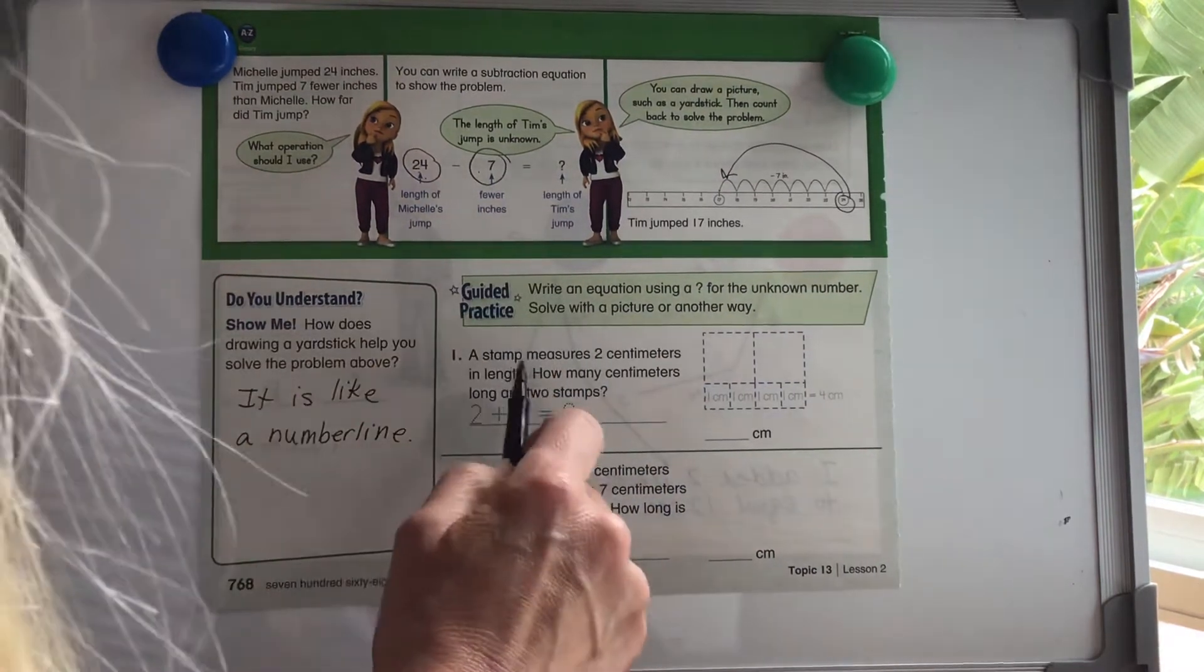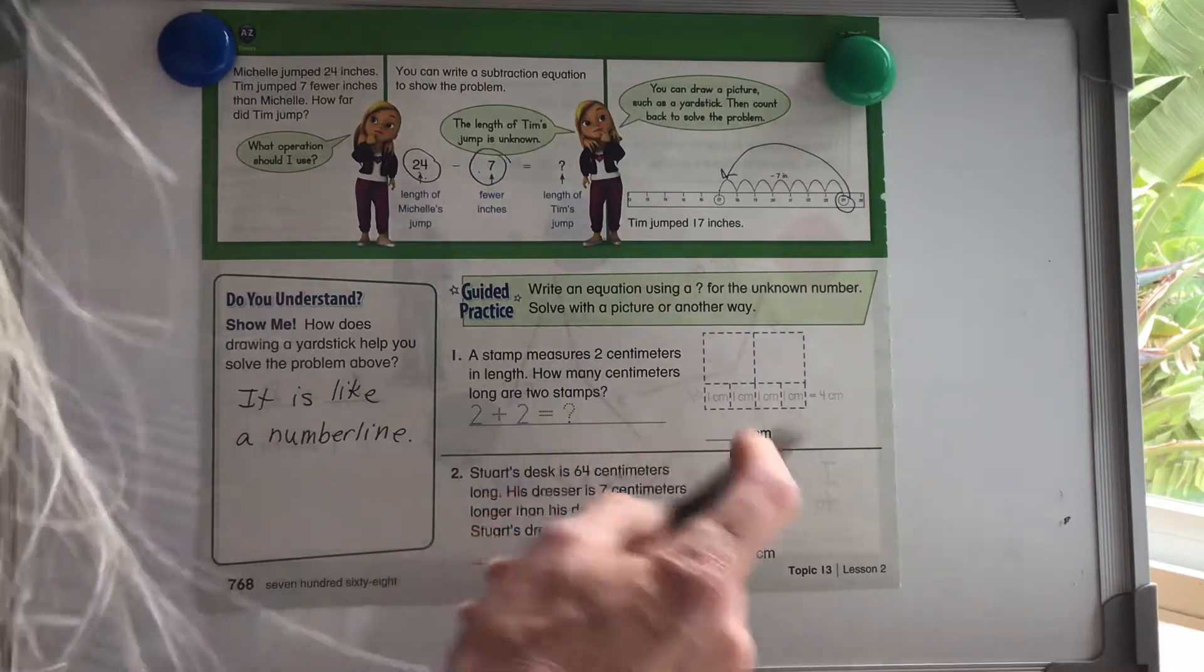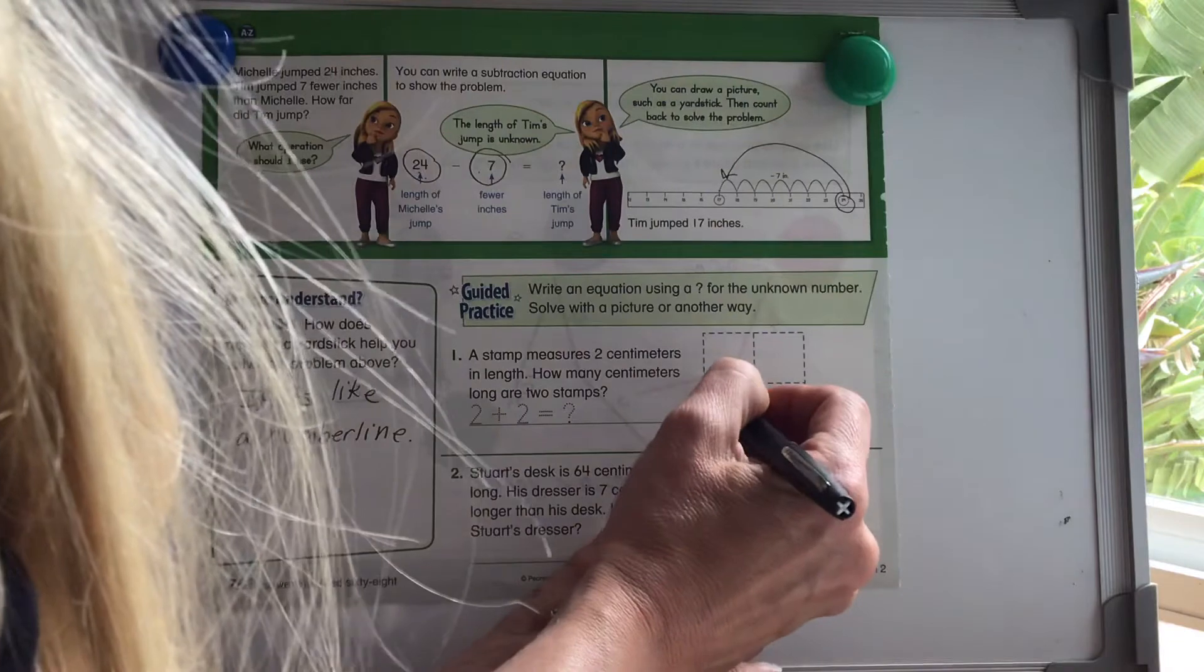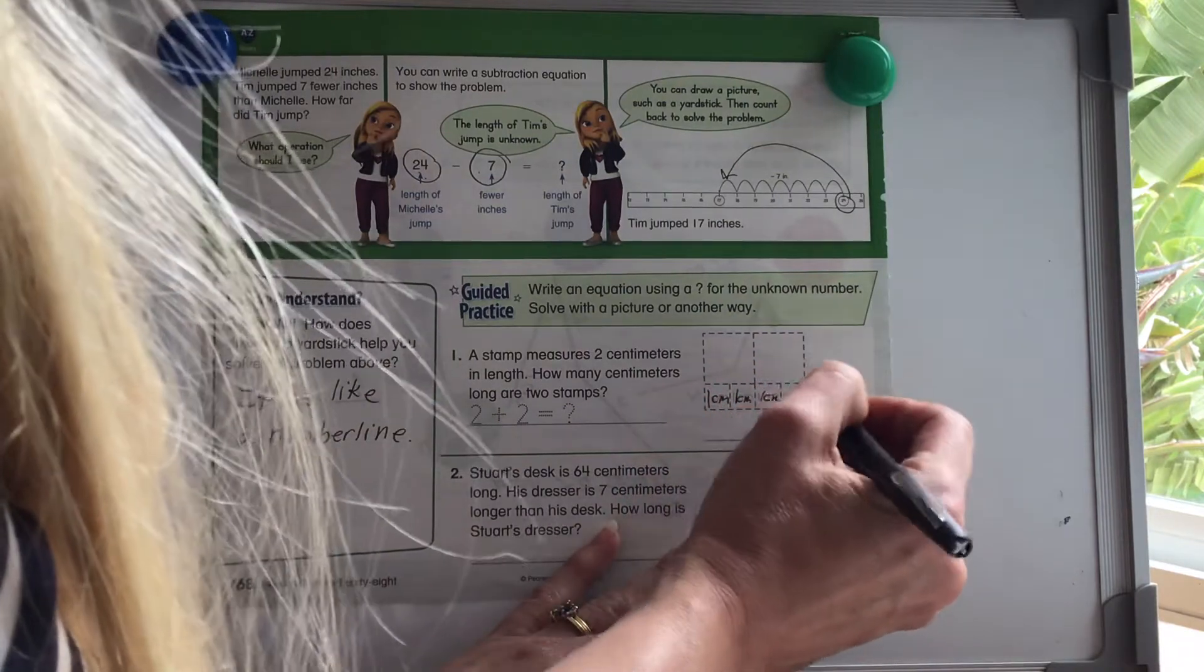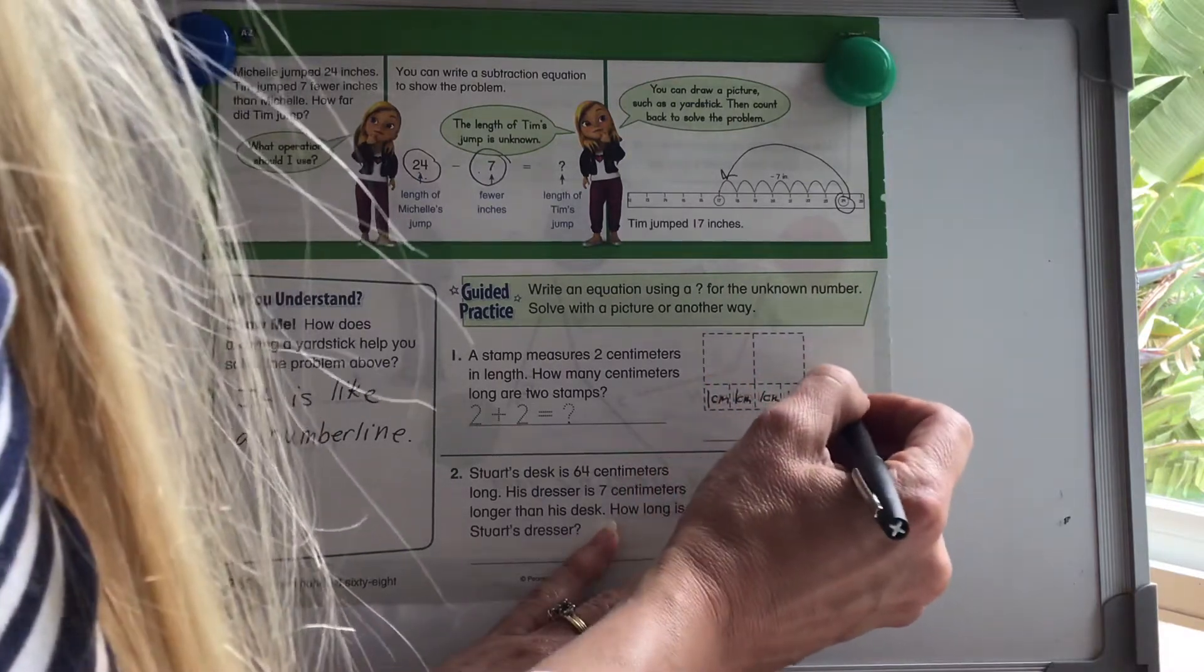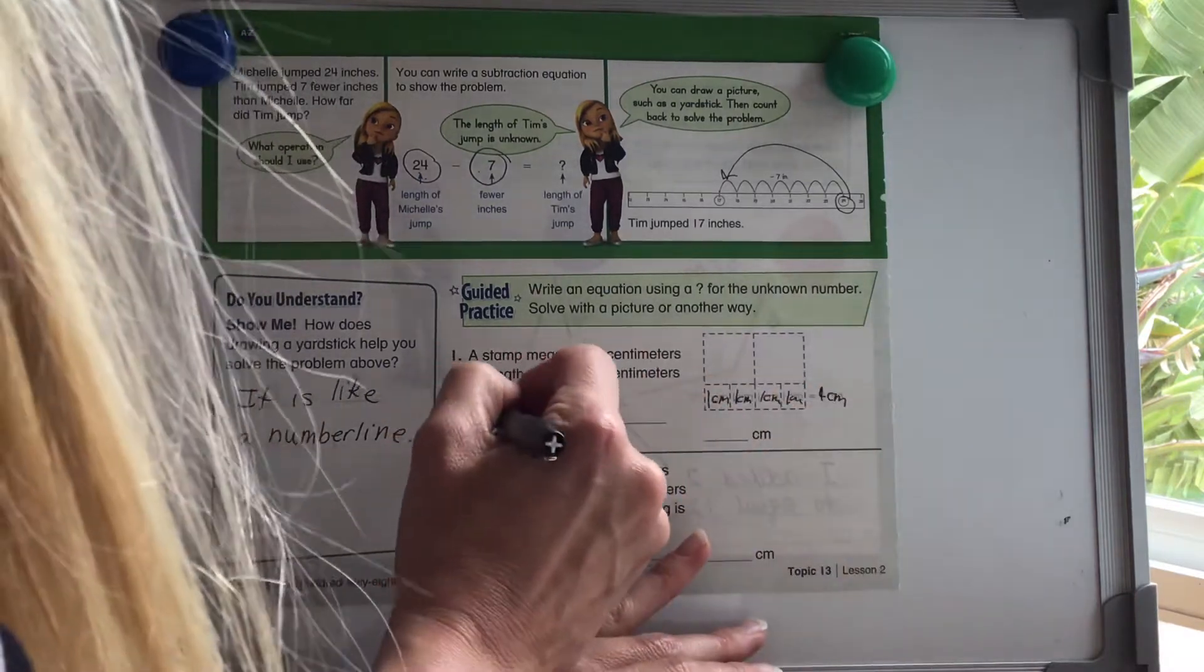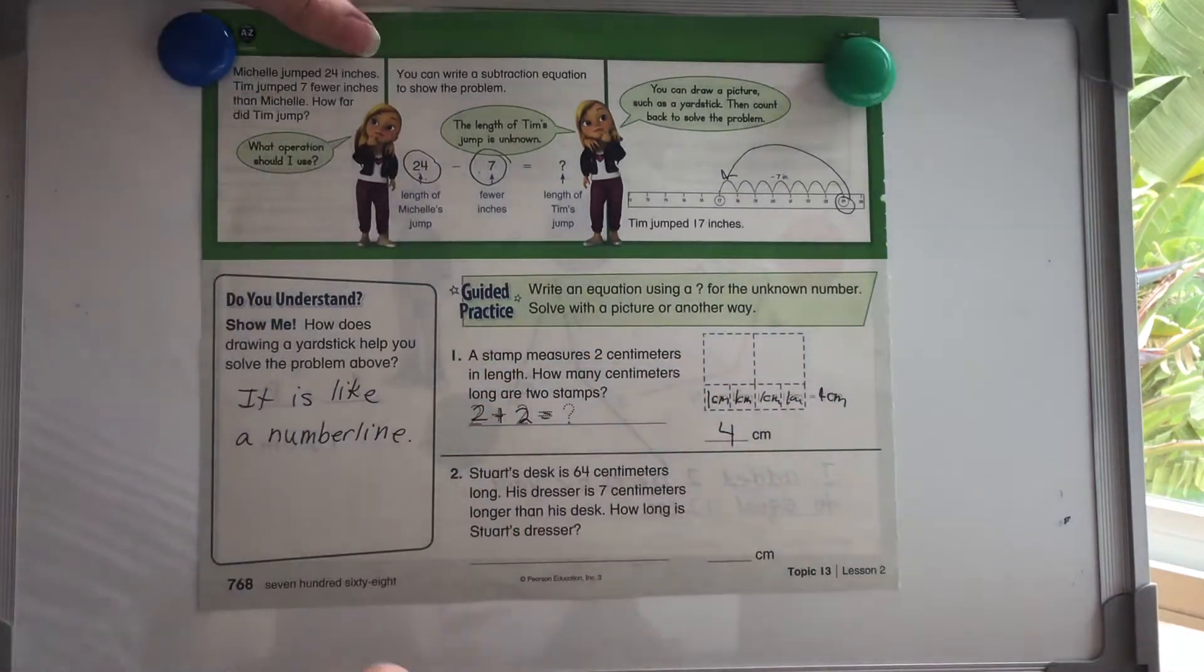So now a stamp measures two centimeters in length. How many centimeters long are the two stamps? So this is one centimeter plus one centimeter plus one centimeter plus one centimeter, one plus one plus one plus one equals four centimeters. So two plus two equals four.